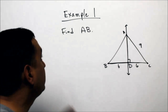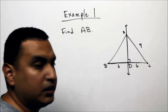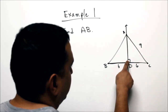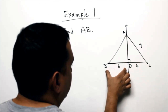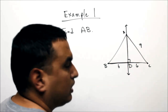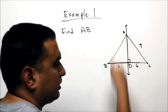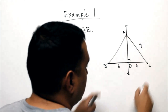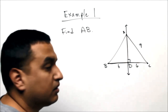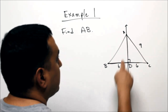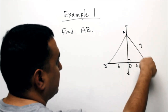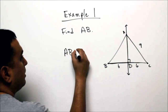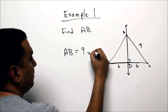Now some examples. The first one asks us to find the distance from A to B. Looking at the diagram, I notice a 90-degree angle and two congruent segments, which tells me that line AD is the perpendicular bisector of segment BC. Because of the perpendicular bisector theorem, if the distance from A to C is 9, then the distance from A to B is also 9 units.